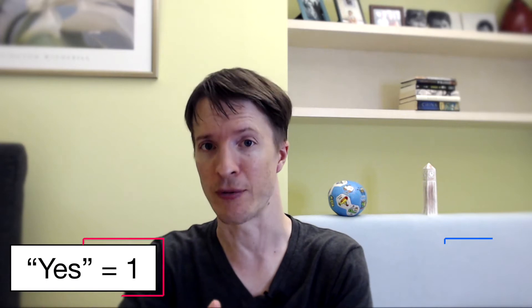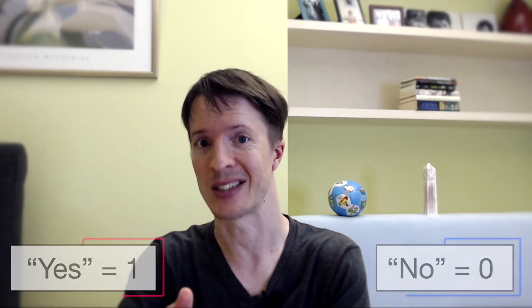Quantitative data is anything that can be counted, anything that can be quantified, anything that you can put a number on. So the score that you got on a math test, the number of hours that you logged at work, how much in debt am I to my creditors — that's all quantitative data. Even something like 'did you vote this year?' yields a quantitative outcome: you either did vote, represented with a one, or you didn't vote, represented with a zero.